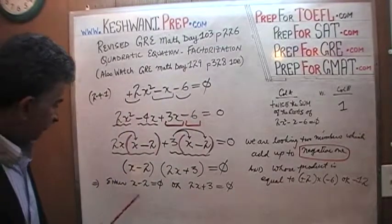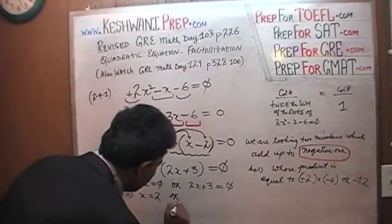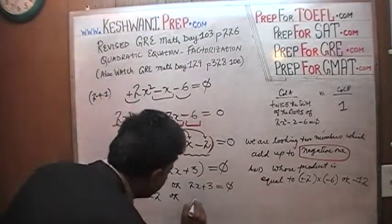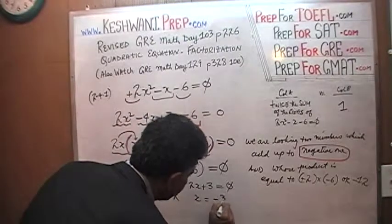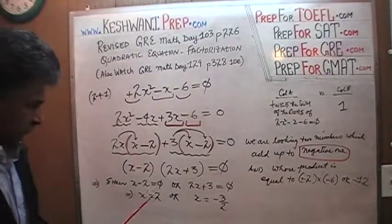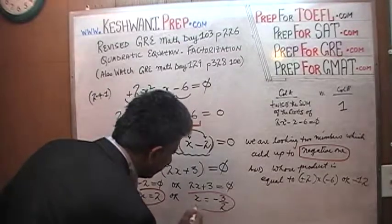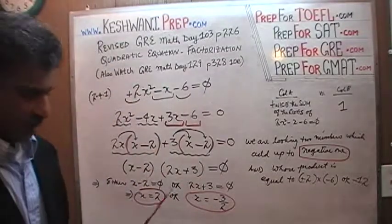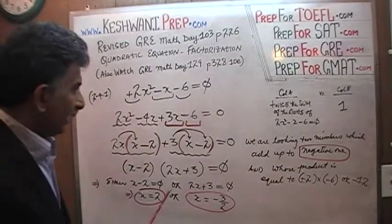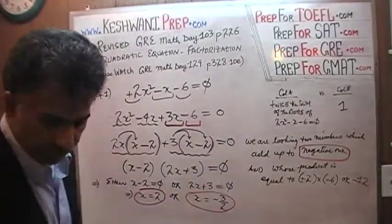If the product of two quantities equals zero, either x minus two equals zero — which means x equals two — or two x plus three equals zero — which means x equals negative three halves. Those are our two roots.